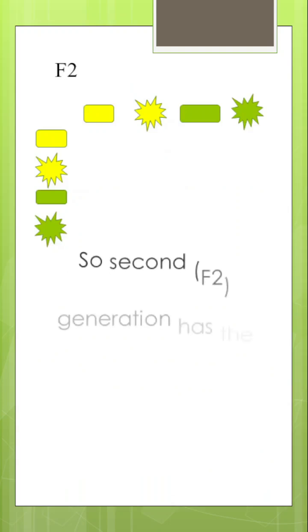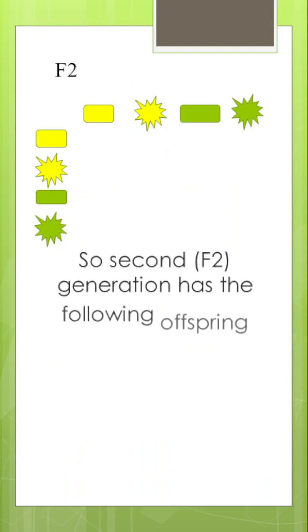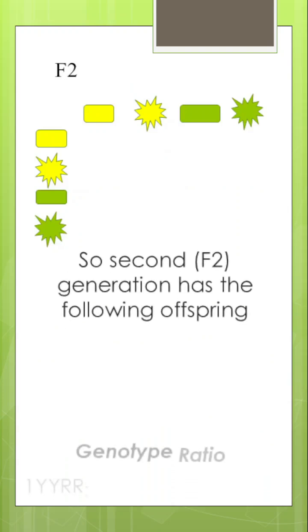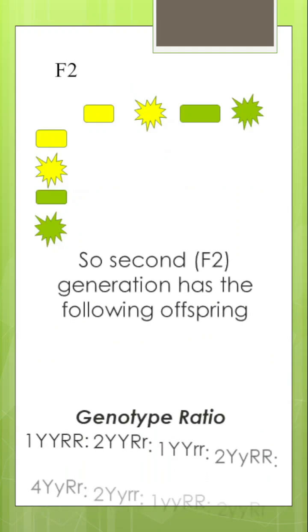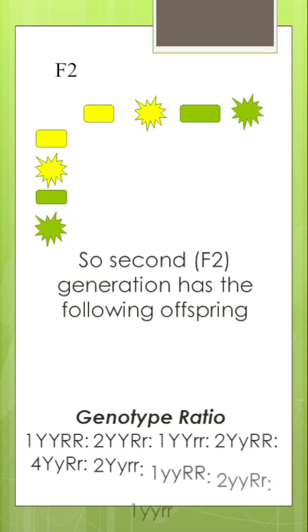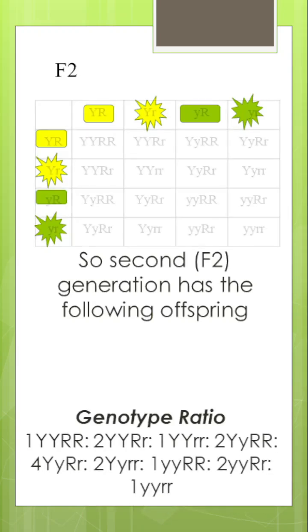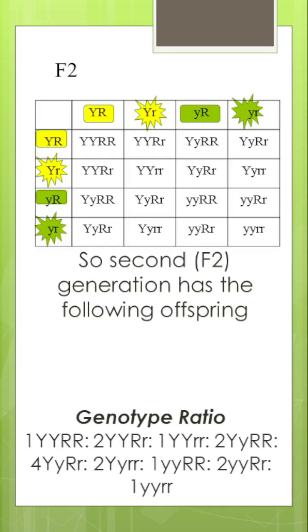The ratio phenotypically — meaning how they look — ends up being nine yellow round, to three yellow wrinkled, to three green round, to one green wrinkled.